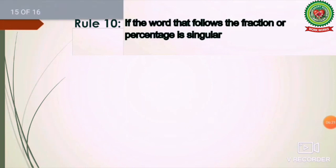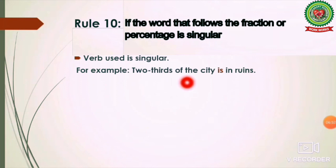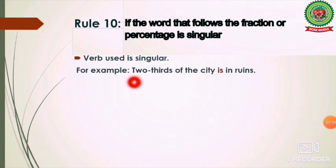The next rule: if the word that follows a fraction or percentage is singular, we use a singular verb. Fractions like two-thirds or one-third are always used as singular subjects, so the verb used is always singular. For example: 'Two-thirds of the city is in ruins.' Even though 'two-thirds' sounds plural, the subject 'two-thirds of the city' is considered singular, so 'is' is used, not 'are.'